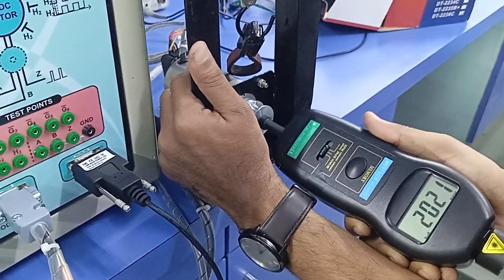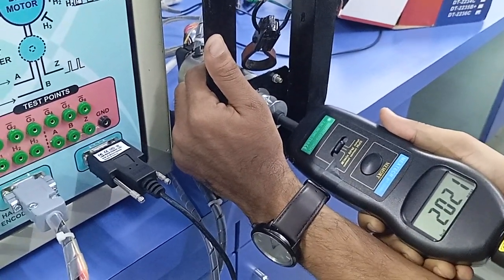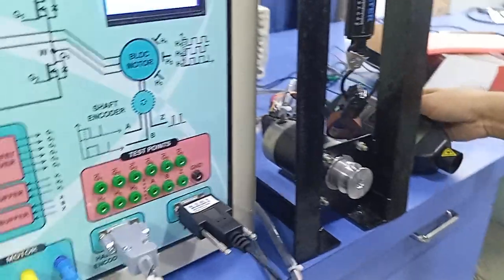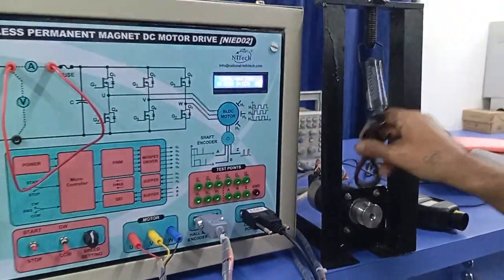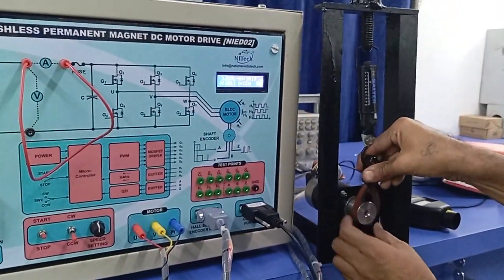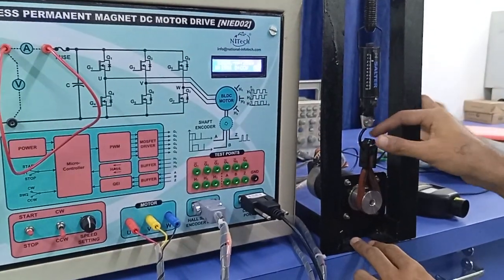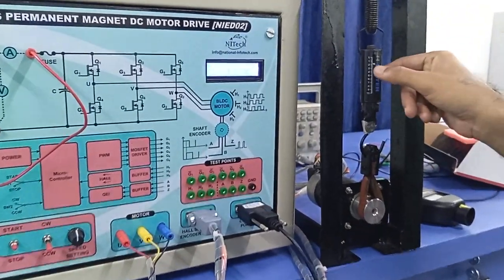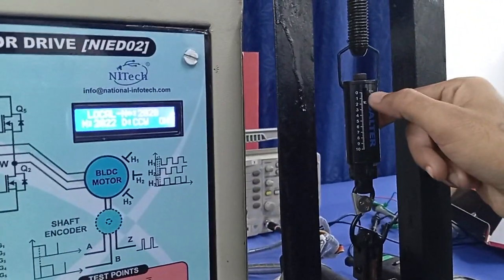Now let's increase the load on the motor. I'm increasing the load. Currently I've given 2 on the scale of 110 kg, which is 20% of the total load.